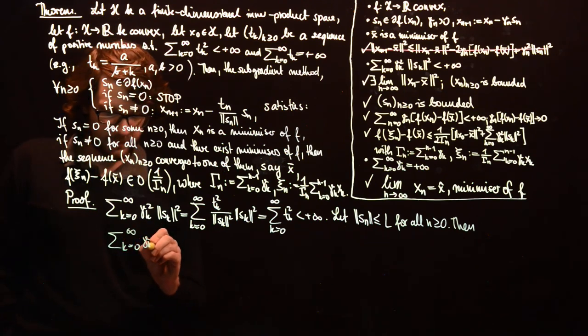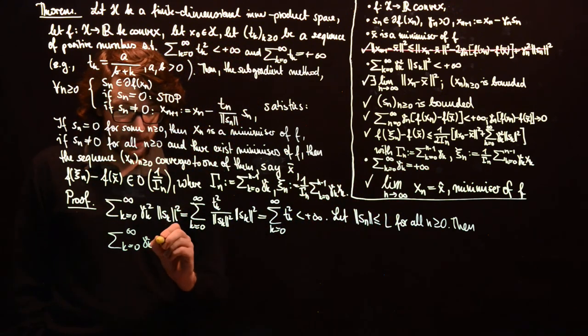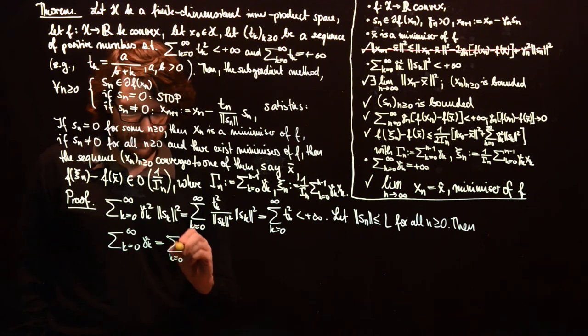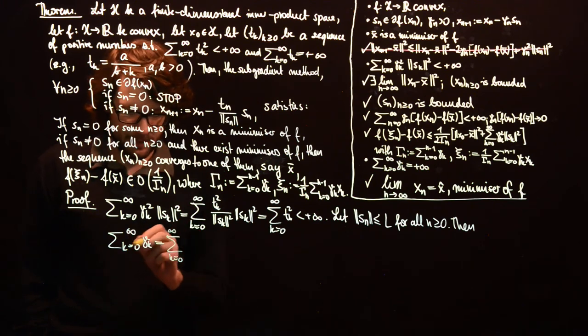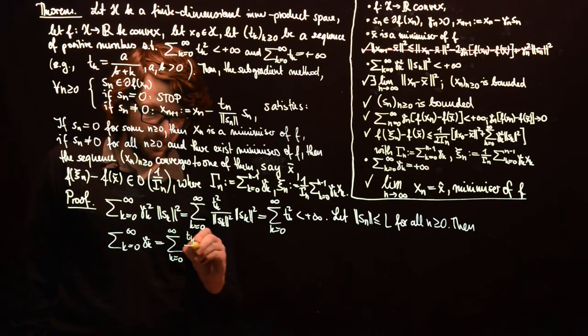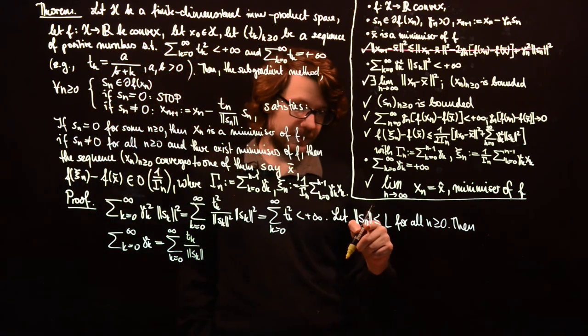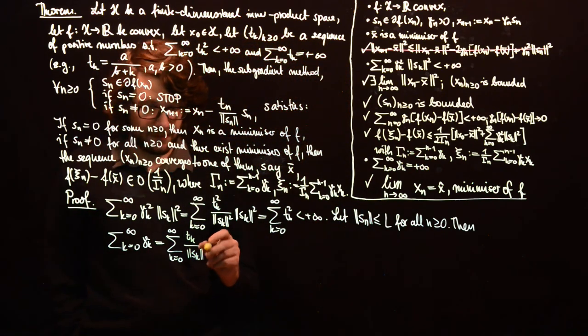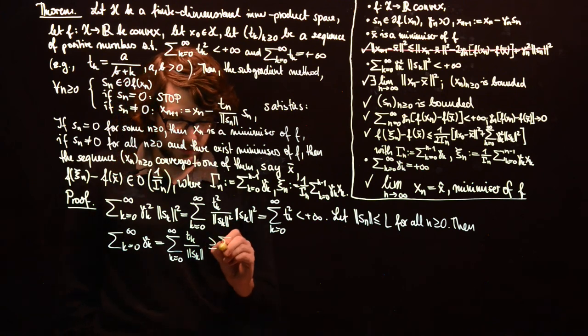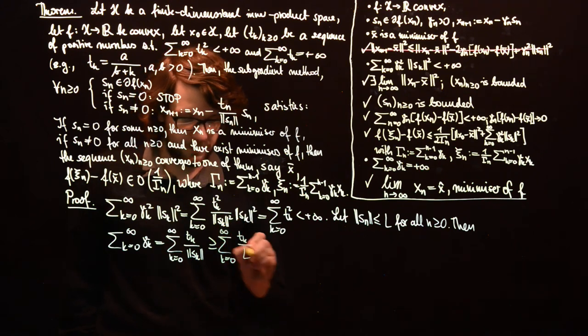So we have to prove that the gamma_k's are non-summable, and this is just from k from 0 to infinity. And again, it's t_k over norm of s_k. And since norm of s_k will be less or equal than L, this will be greater or equal than sum of t_k over L.